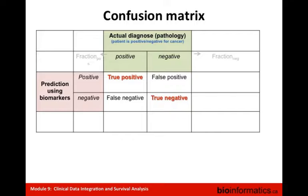A confusion matrix is a visualization tool used in supervised learning. Columns represent instances in actual classes and rows represent instances in predicted classes. For example, if we are developing a new biomarker to predict cancer versus normal and comparing with histopathology as the gold standard — the confusion matrix displays the number of correct and incorrect predictions made by our biomarker model. It shows true positives, false positives, false negatives, and true negatives.